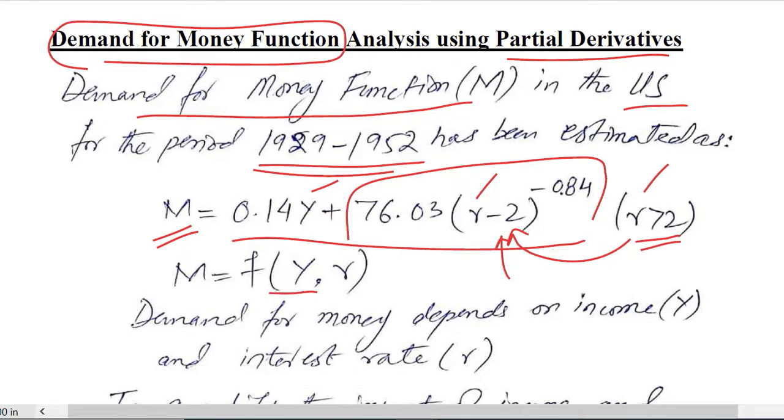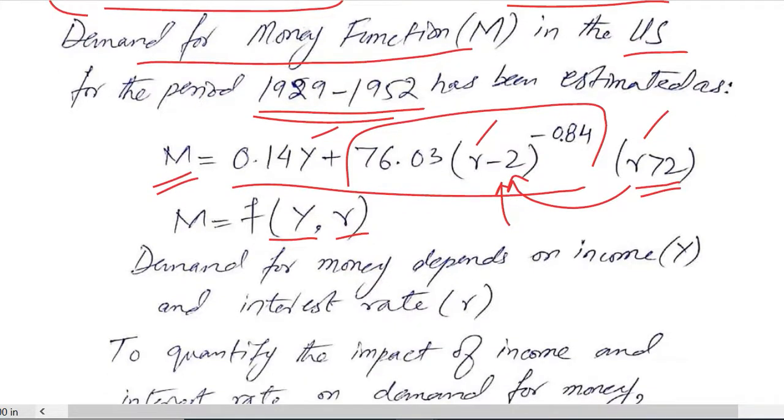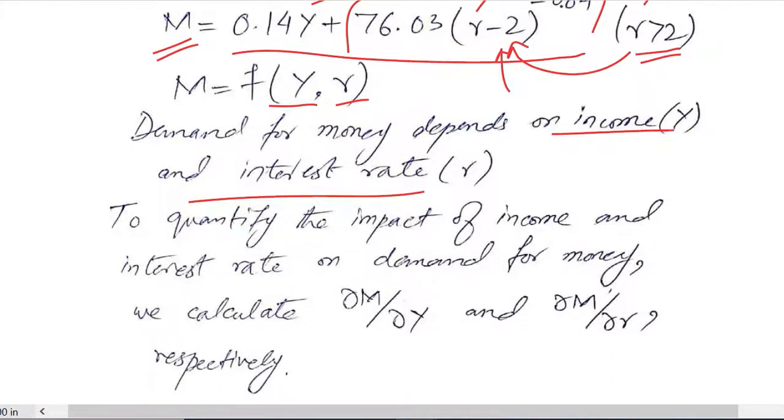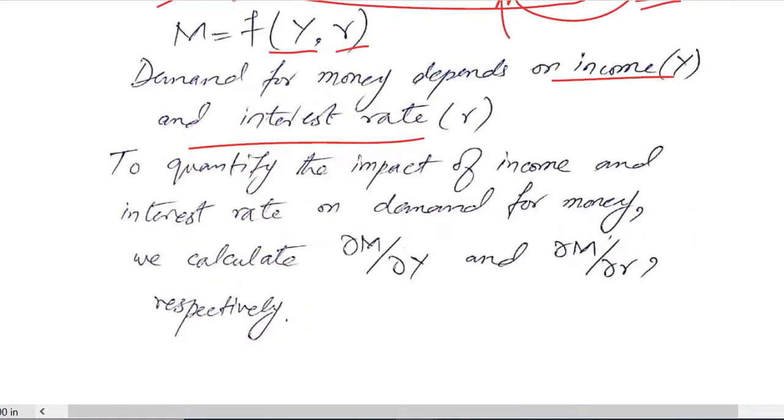On the whole we can see that Y and R are the independent variables. We know that Y is the income and R is the interest rate. So clarifying what these notations are, we go ahead and analyze the effects of these two variables on the demand for money.